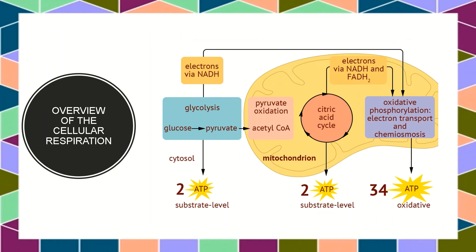So in total, we have produced 32 ATPs from the electron transport chain plus 2 from the citric acid cycle, giving 34 ATPs, and 2 from glycolysis, for an overall total of 36 ATPs produced.